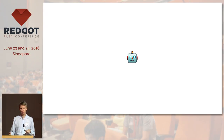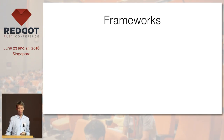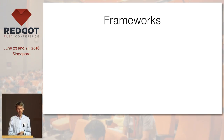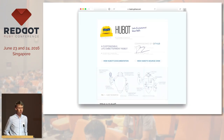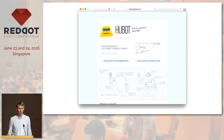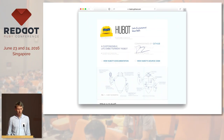Now we come to the part about frameworks — existing ChatOps frameworks and our own framework, and the reasons why we wrote it. The first framework is called Hubot, invented by GitHub. Hubot is written in CoffeeScript, which means it runs in JavaScript on Node.js.